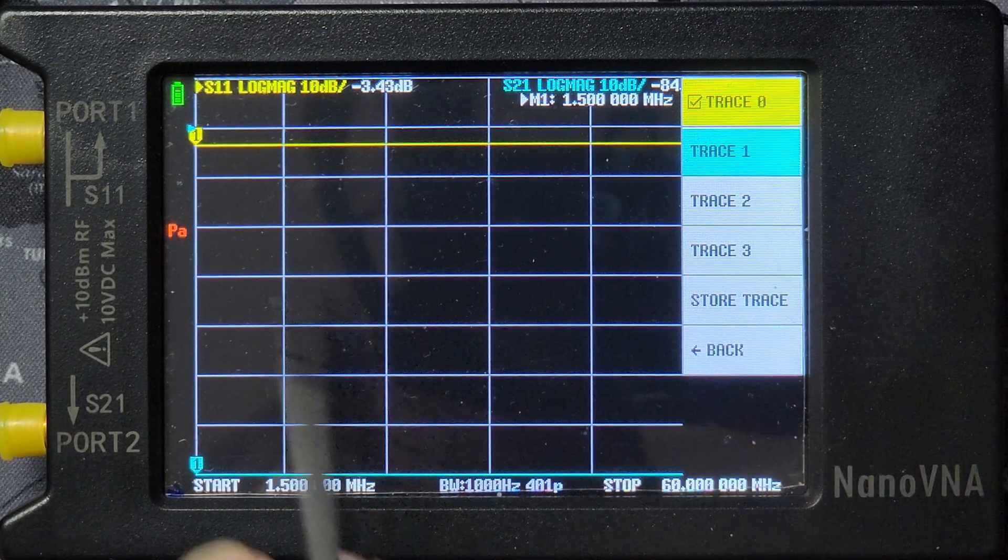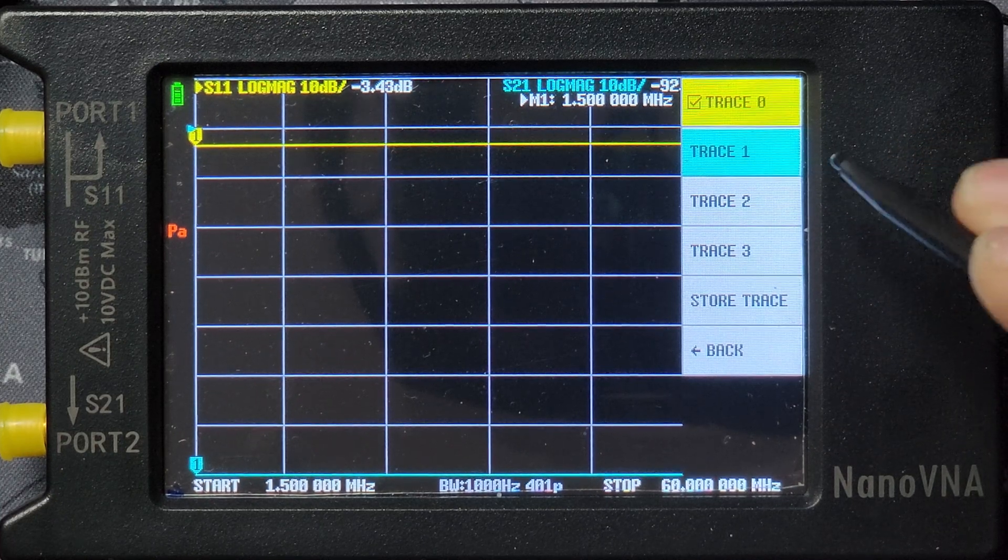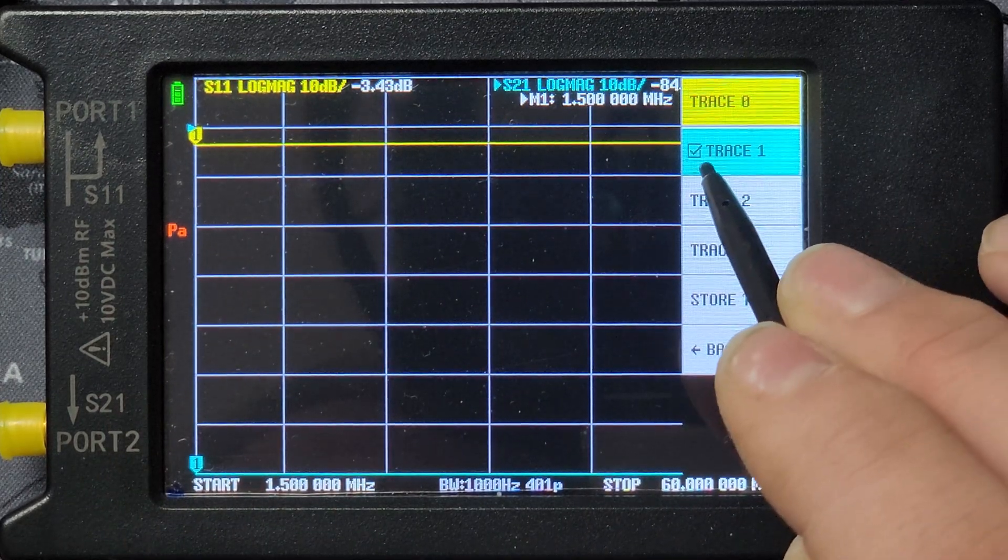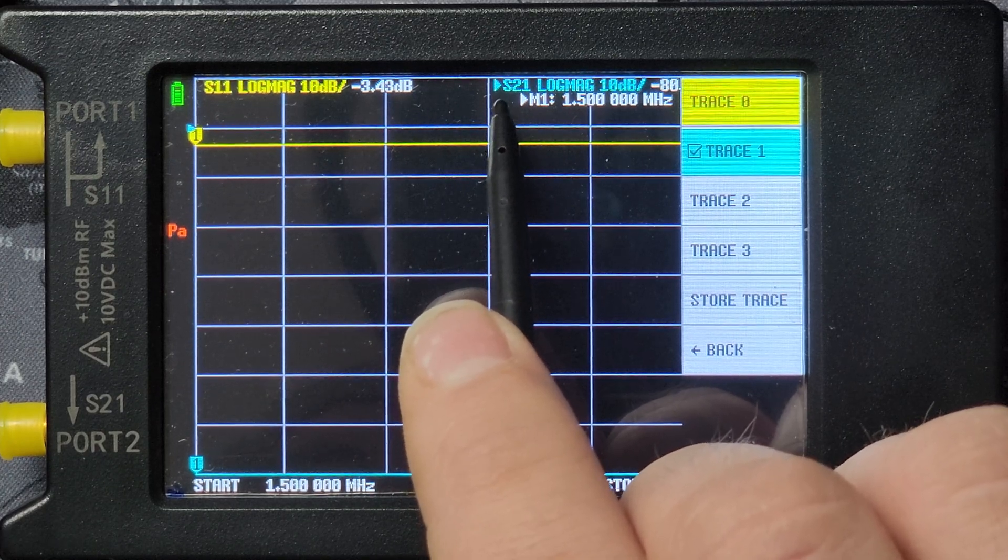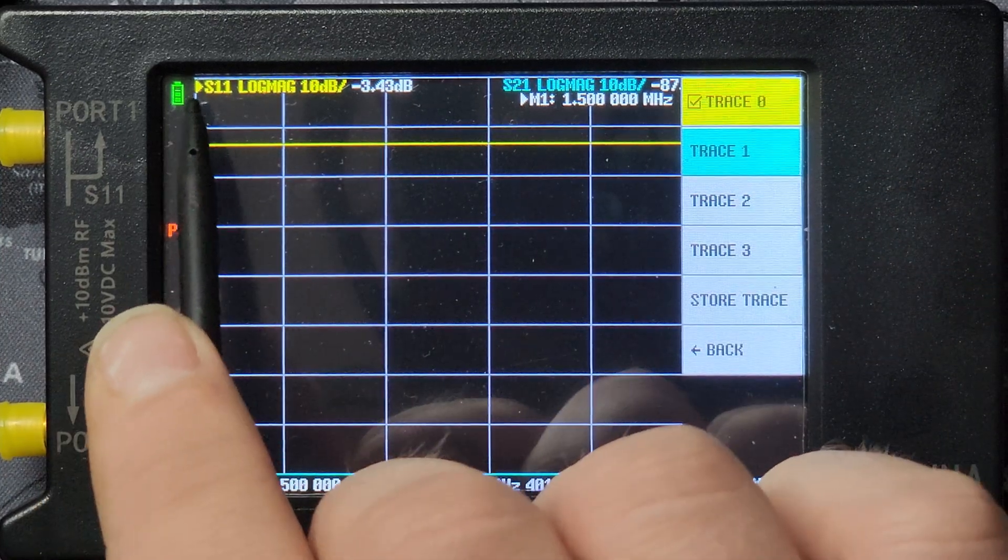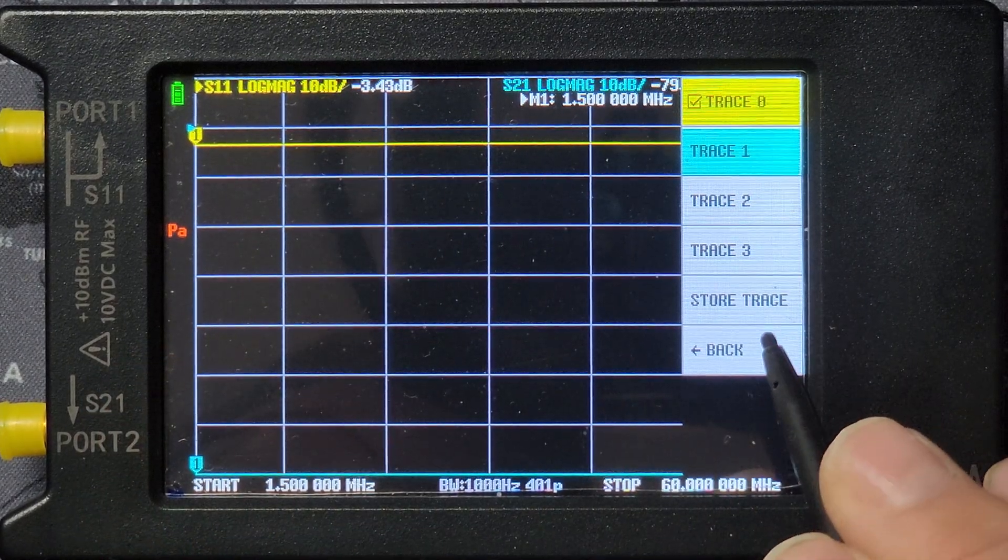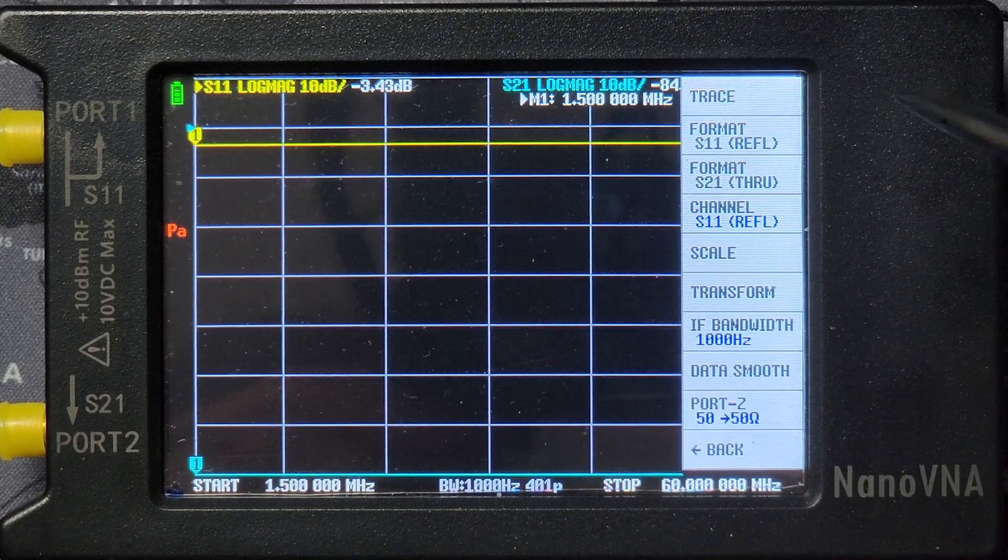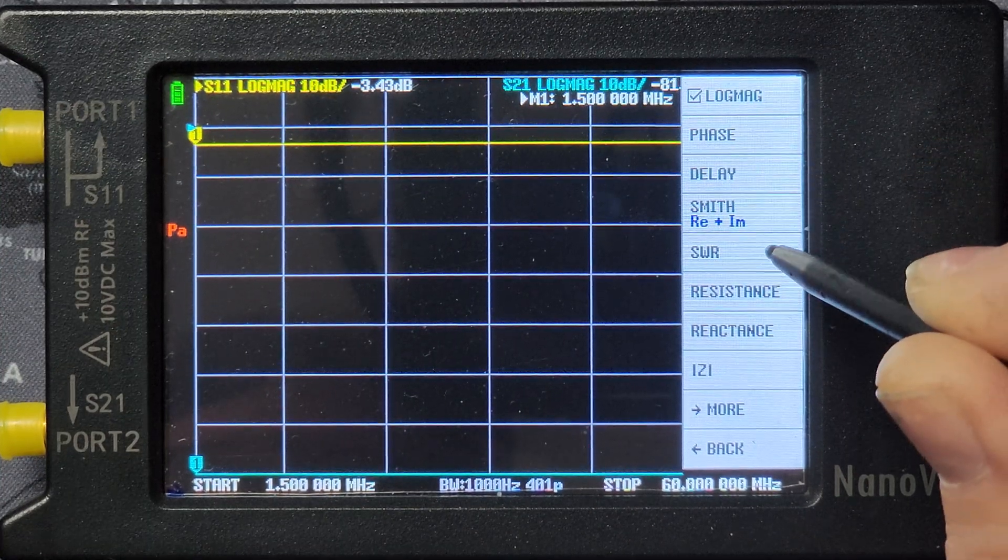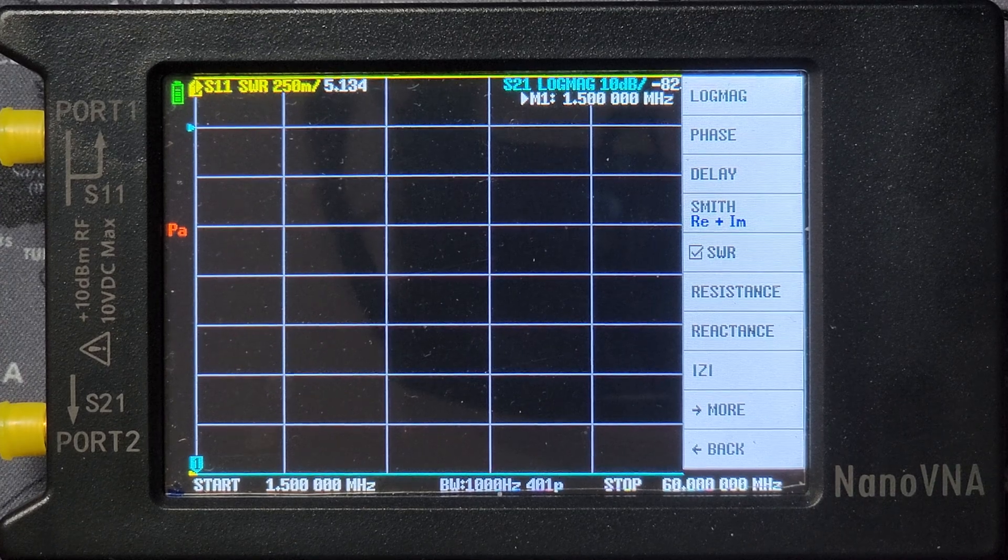Now it's based on the colors you want. Now we're on trace zero. Now what you want to do is I want to trace zero, which is already preselected. If I select it, the indicator goes to the left of the words, S21 log mag, and it has a check mark here. So if I click on this, it moves it over here. So that's the one we're actually editing. So I want to switch the S11, the yellow, to SWR. So what you want to do is you go to format. And I want to change it to SWR. Obviously it's showing a high SWR because we have not calibrated this yet.